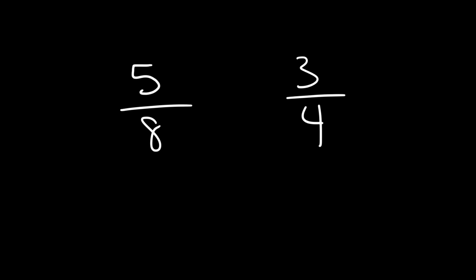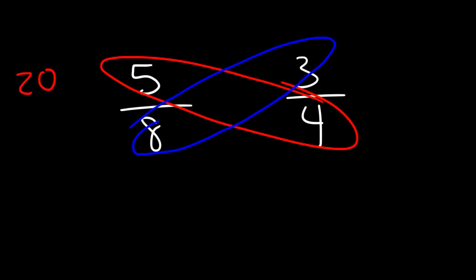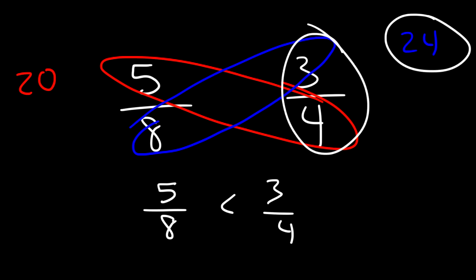A simple technique that you could use is cross multiply. 5 times 4 is 20 and 3 times 8 is 24. Now which number is greater? Is it 20 or 24? 24 is greater than 20, so we could say that 5 over 8 is less than 3 fourths. Because this number is larger, this fraction on the right is greater than the one on the left. So 3 over 4 is greater than 5 over 8.